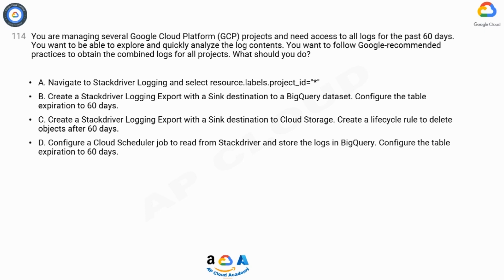A: Navigate to Stackdriver Logging and select resource.labels.project_id equals asterisk. B: Create a Stackdriver Logging export with a sync destination to a BigQuery dataset; configure the table expiration to 60 days. C: Create a Stackdriver Logging export with a sync destination to Cloud Storage; create a lifecycle rule to delete objects after 60 days. D: Configure a Cloud Scheduler job to read from Stackdriver and store the logs in BigQuery; configure the table expiration to 60 days.